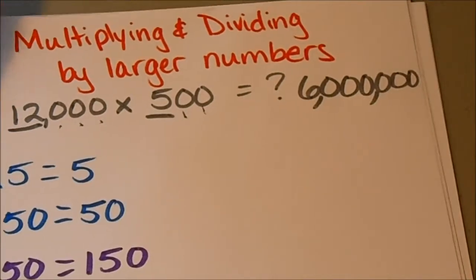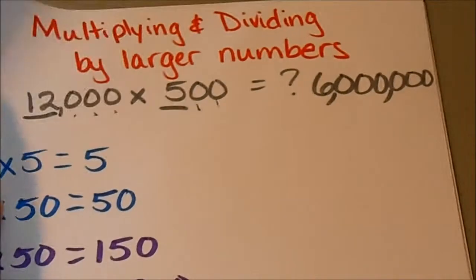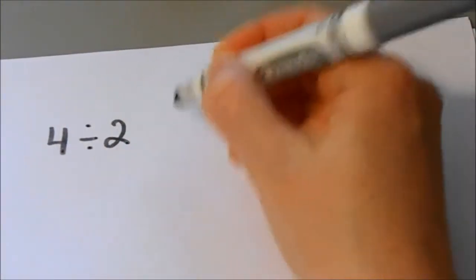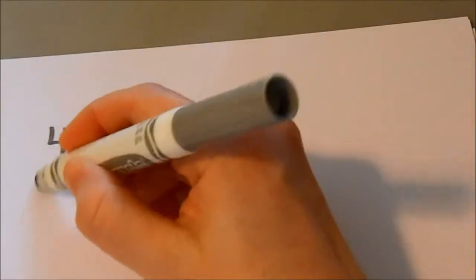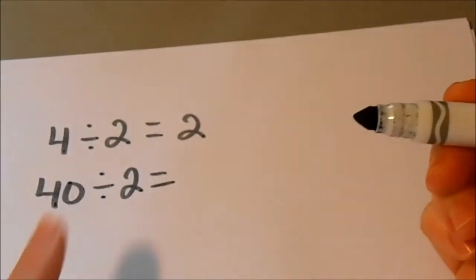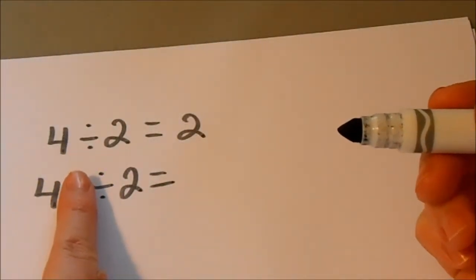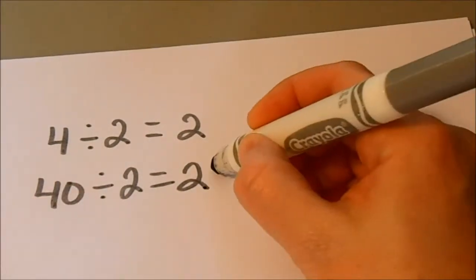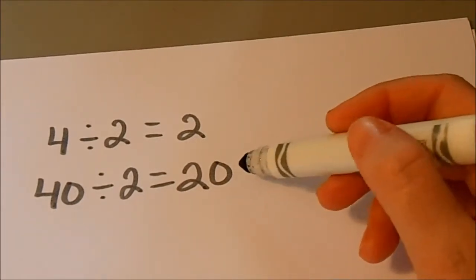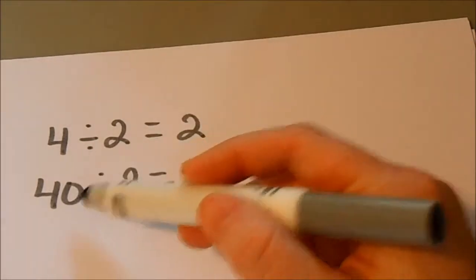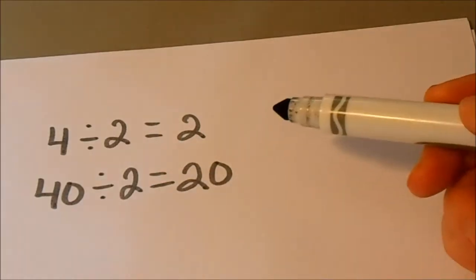I'm also going to show you how to do this same trick with division. It pretty much works the same way — you want to use those significant numbers. Let's start off with an easy one: 4 divided by 2, which is 2. If I have 40 divided by 2, I'm still just looking at my significant numbers, so 4 divided by 2 is still 2 and then I've got that 0 on the end. It's really important to ask yourself: does my answer make sense? Is 20 a reasonable answer for 40 being divided into two groups? Yes, 20 makes sense.